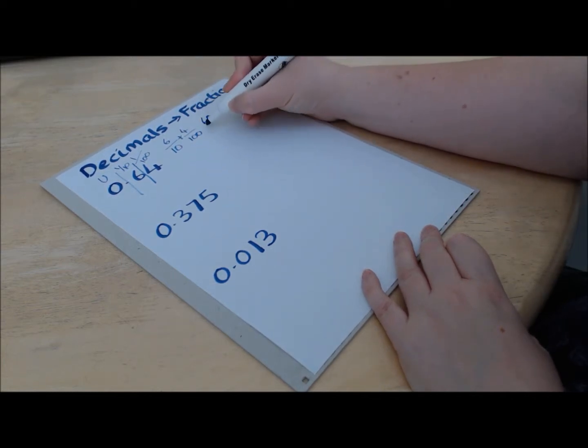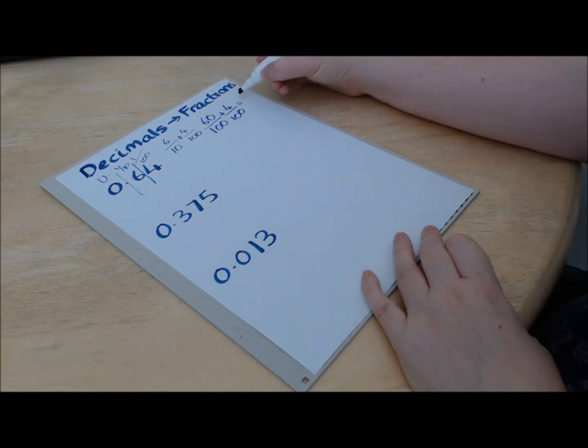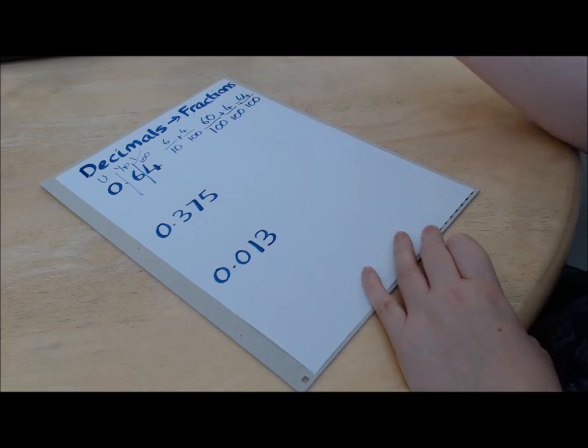So that takes us to 60 over 100 plus 4 over 100, which means we've now got 64 over 100. OK, so that's our initial step.